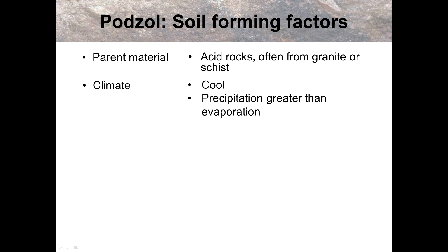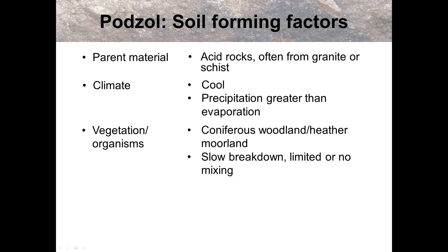Climate: it's cool, precipitation is greater than evaporation — you then have to link that in. What does that cause? It causes leaching from that grey horizon, that ash grey colour. Vegetation and organisms: coniferous woodland and heather moorland, which adds to the acidity of the soil. It's a slow breakdown, so there's limited or no mixing. When we're talking about slow breakdown, we can link that back to climate — because if it's a cool climate, think of your freezer, there's a lot less decomposition happening.